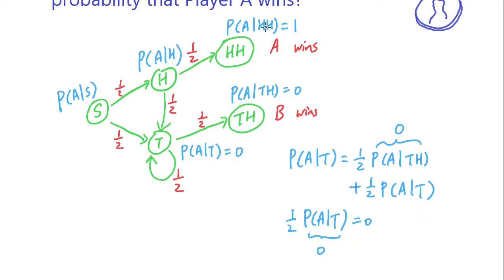Now we have P(A|HH) and we have P(A|T). We are ready to solve for P(A|H). That's one half P(A|HH) plus one half, this path, one half of P(A|T).